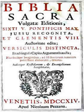The Sistine Vulgate, prepared by Pope Sixtus V, was edited in 1590, but it was unsatisfactory from a textual point of view. As a result, this edition was short-lived.